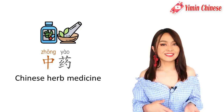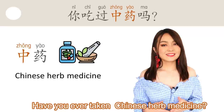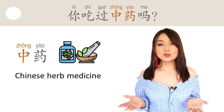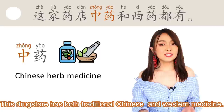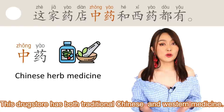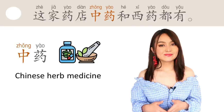Next one is 中药, Chinese herbal medicine. 比如说：你吃过中药吗？ Have you ever taken Chinese herbal medicine? It tastes very bitter. Another sentence: 这家药店中药和西药都有。 This drugstore has both Chinese herbal medicine and Western medicine. Pay attention to the word order of this sentence.